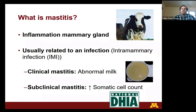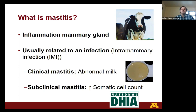First of all, I consider it important to define mastitis. Mastitis is the inflammation of the mammary gland that usually stems from an infection, referred to as an intramammary infection. Basically what happens is that a microorganism, usually bacteria, invades the mammary gland through a teat canal and colonizes the mammary tissue. The presence of this microorganism is then recognized by the immune system and triggers an inflammatory response.